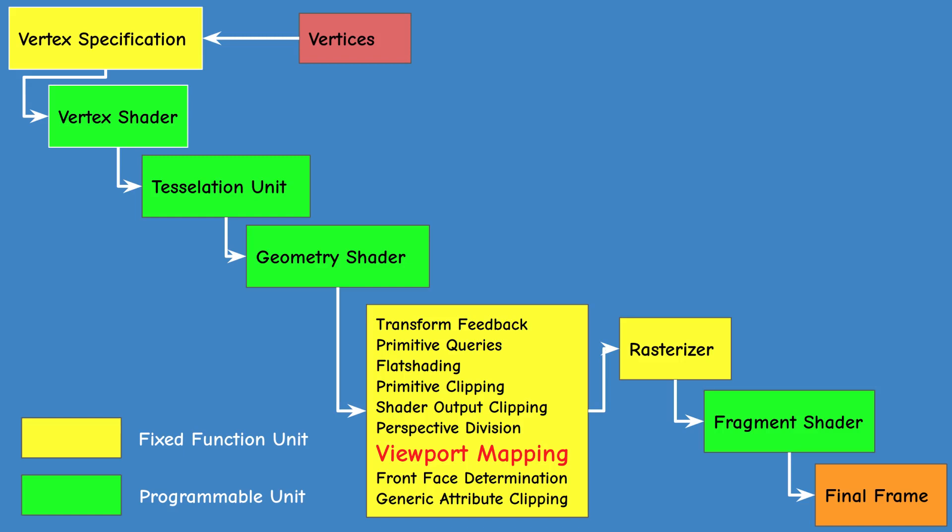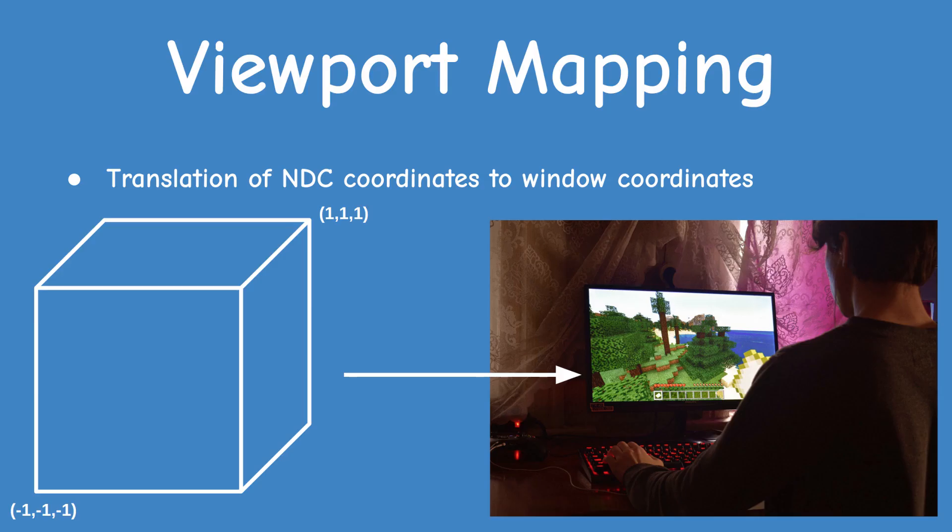After perspective division we have viewport mapping. This step translates the NDC coordinates to window coordinates. It provides separation between the logical world of 3D transformations and the physical world of pixels on the screen.